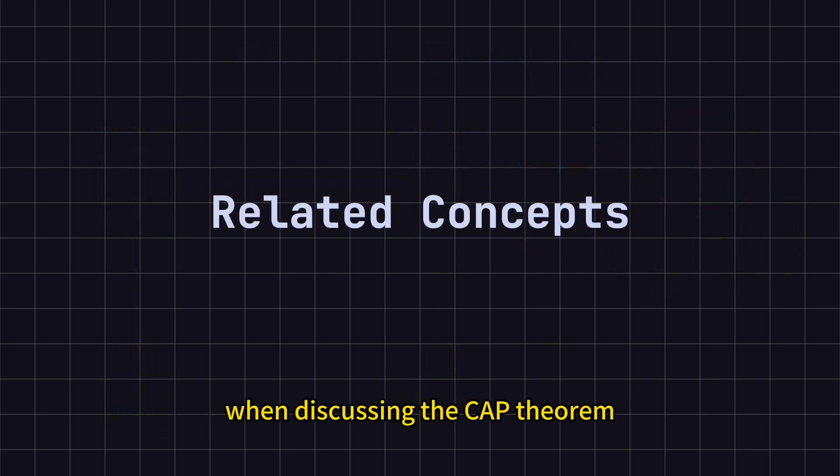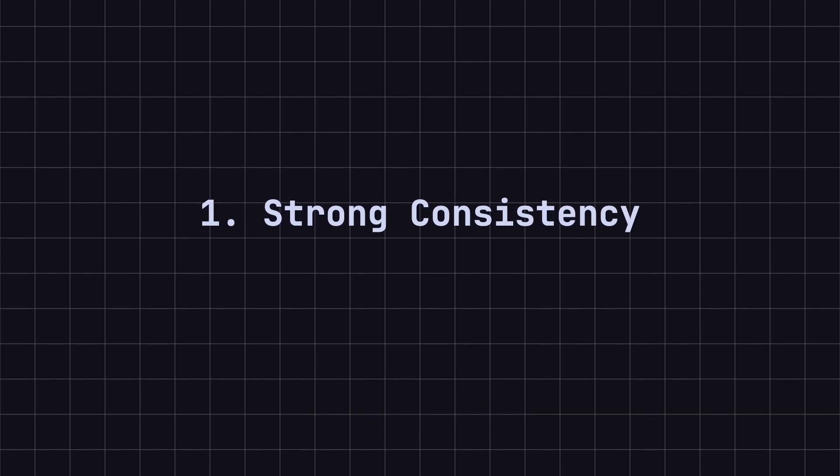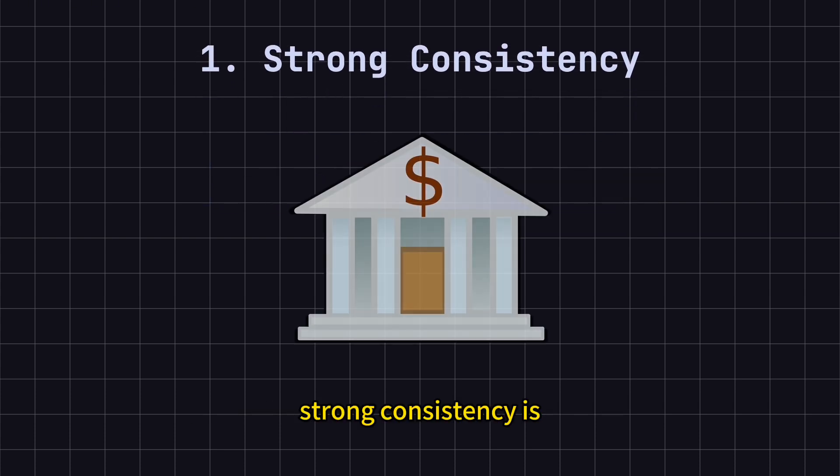When discussing the CAP theorem, several related concepts often come up, helping us better understand and apply the theory. First, Strong Consistency. This ensures that all nodes have consistent data at any given time. Before a write operation is considered successful and returns a response to the client, it must be synchronized across all nodes. Strong consistency is critical in scenarios like financial systems and inventory management in e-commerce, where data consistency is crucial.